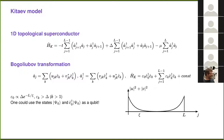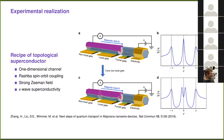How does one make such a chain experimentally? The recipe for topological superconductivity is the following: one needs a one-dimensional channel, usually realized by a semiconducting nanowire, with Rashba spin-orbit coupling, a Zeeman field, and proximity-induced superconductivity. The Majorana zero modes reveal themselves as peaks of local differential conductance at the edge of the wire.